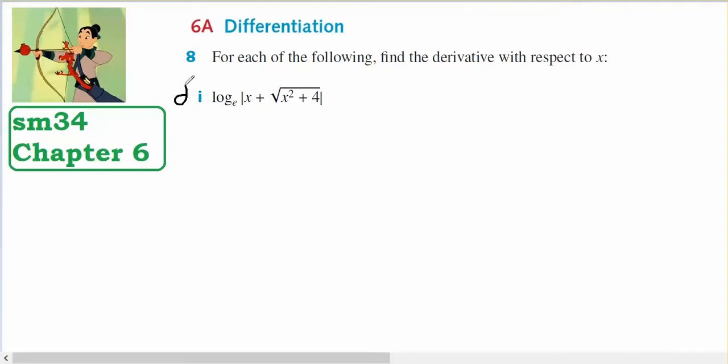Okay, so the derivative of this will equal 1 over x plus x squared plus 4 to the half, times the derivative of the inside.